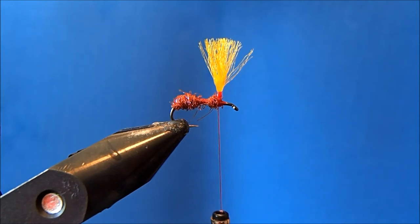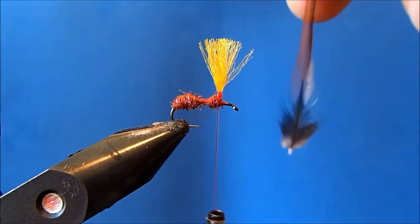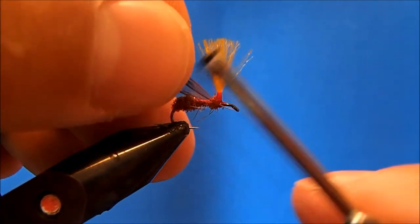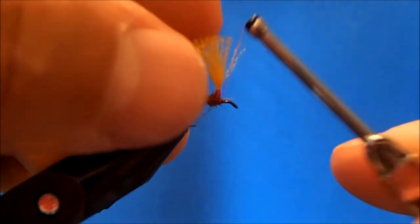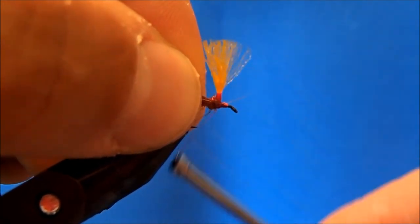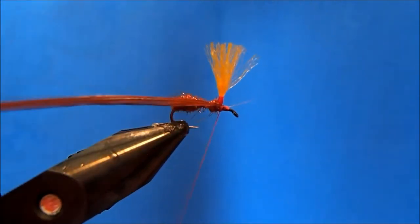I'm going to add the parachute part, and that's going to be a furnace hackle that I'm going to use. I'm going to try to match the color of the body. I've taken a section of furnace hackle. I'm just going to clean off the stem, give it a cut, get a good tie-in point and tie that into the front. Notice I'm tying it in front of the post.